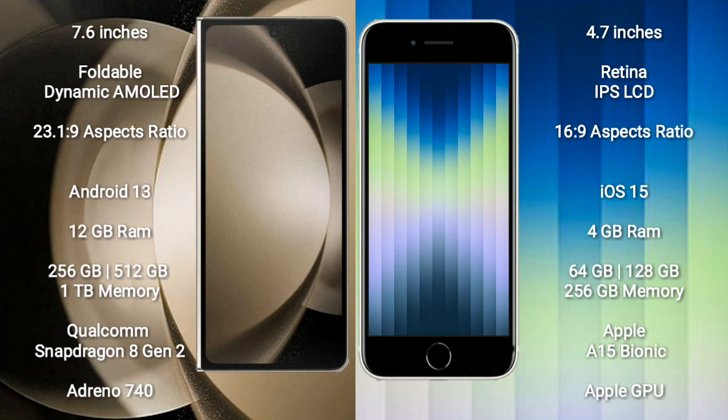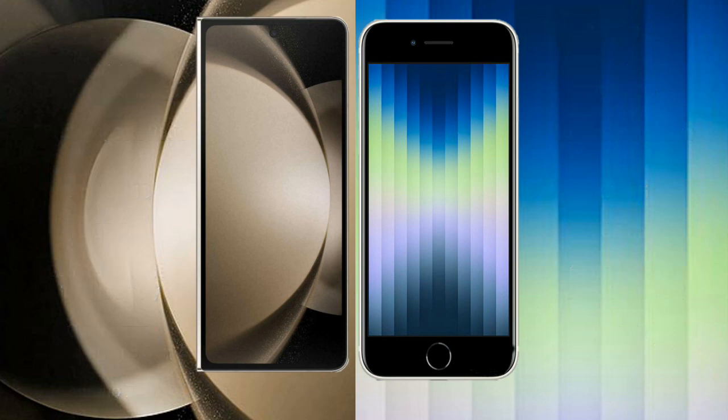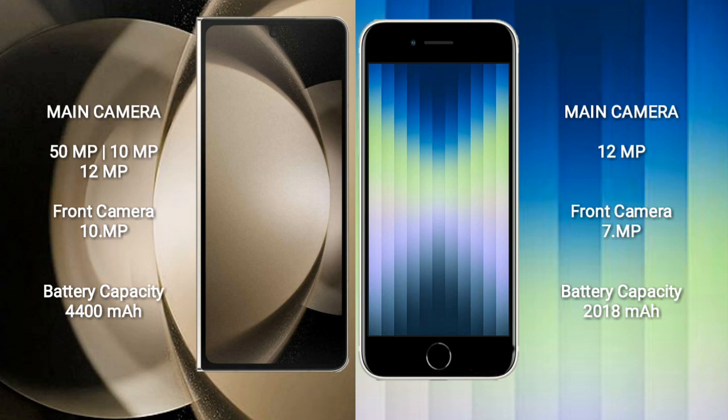Samsung Galaxy Z Fold 5 comes with 12GB RAM and 256GB, 512GB, or 1TB internal storage, powered by a Qualcomm Snapdragon 8 Gen 2 processor and Adreno 740 GPU. iPhone 8C comes with 4GB RAM and 64GB or 128GB internal storage, powered by an Apple A15 Bionic processor and Apple GPU.